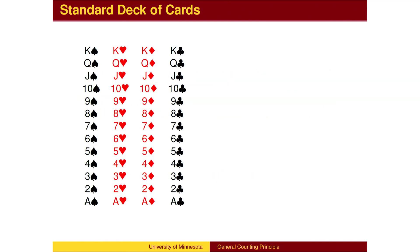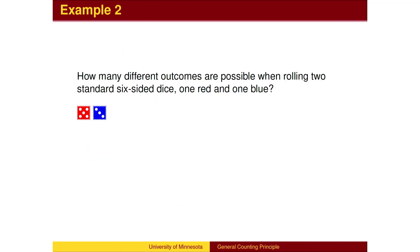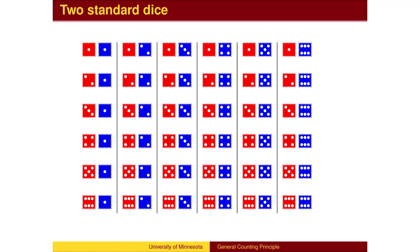Here is a visual of the deck of cards. There are 4 columns for the 4 suits and 13 rows for the 13 values. Here is a second example: rolling two six-sided dice. There are 6 choices for the red die and 6 for the blue die, so a total of 36. There are 6 rows for the 6 different values for the red die, and 6 columns for the 6 values of the blue die.